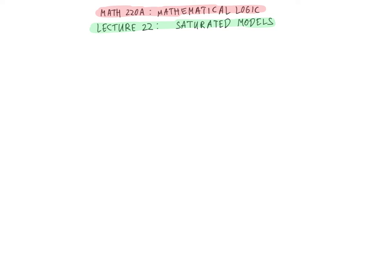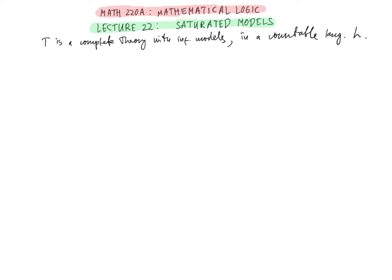Hello everyone and welcome back to Math 220a, Mathematical Logic, Lecture 22: Saturated Models. So far we have concentrated on models that realize as few types as possible, namely the prime and the atomic models. Today we will study models realizing as many types as possible, modulo the cardinality restrictions. Throughout our discussion today we assume that T is a complete theory with infinite models in a language L which is countable. Many of the points we'll be making can also be adapted to languages of arbitrary cardinality, but it will simplify some technical details for us today.